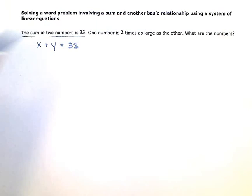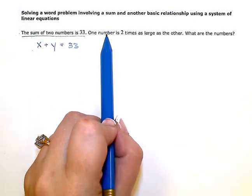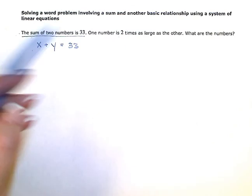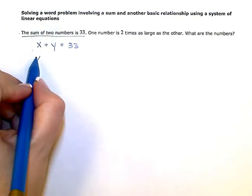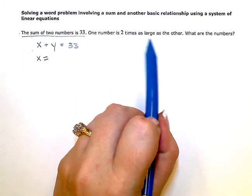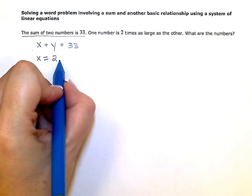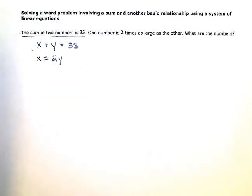So this sentence translated into an equation looks like this, x plus y equals 33. Now this next sentence says one number is, so one of the numbers, I'll just pick x, is two times as large as the other number. So two times as large as the other number. So here's my second equation.